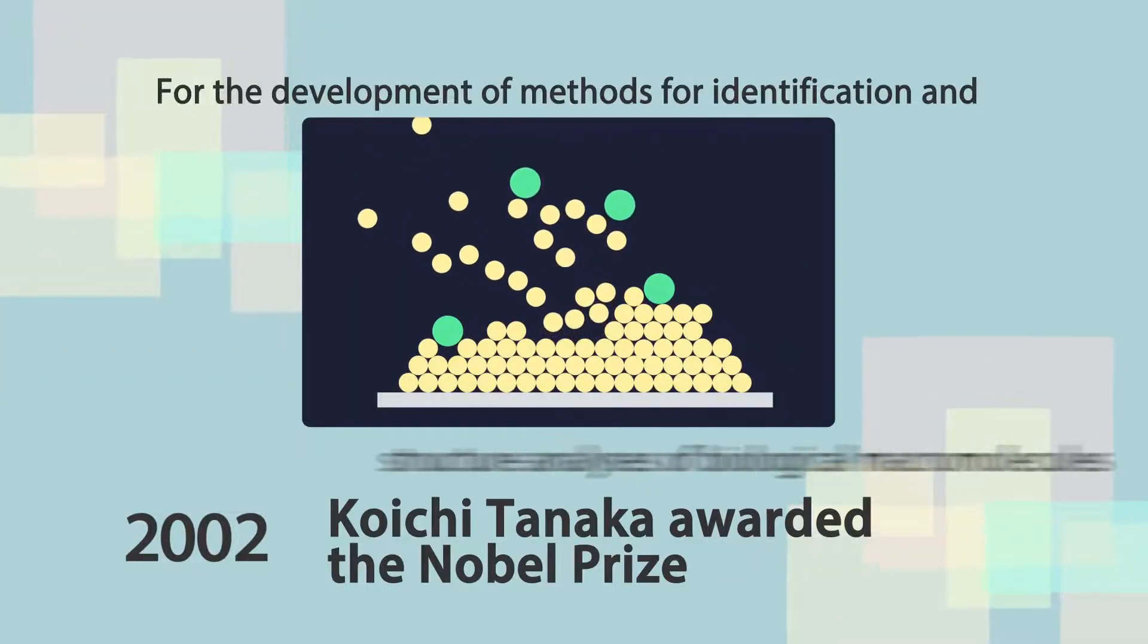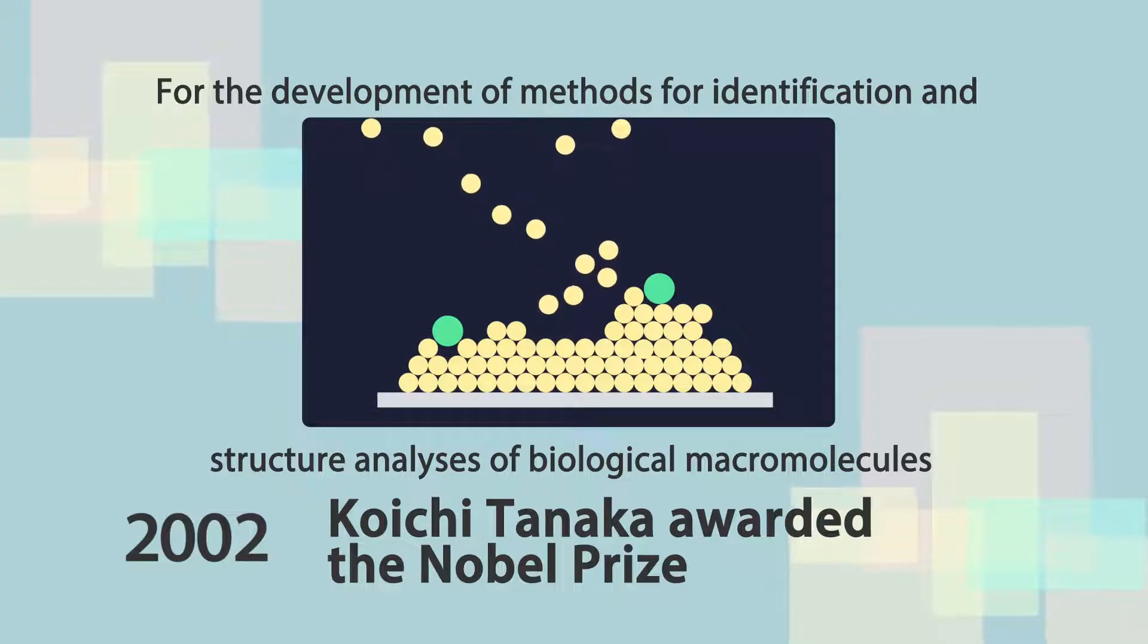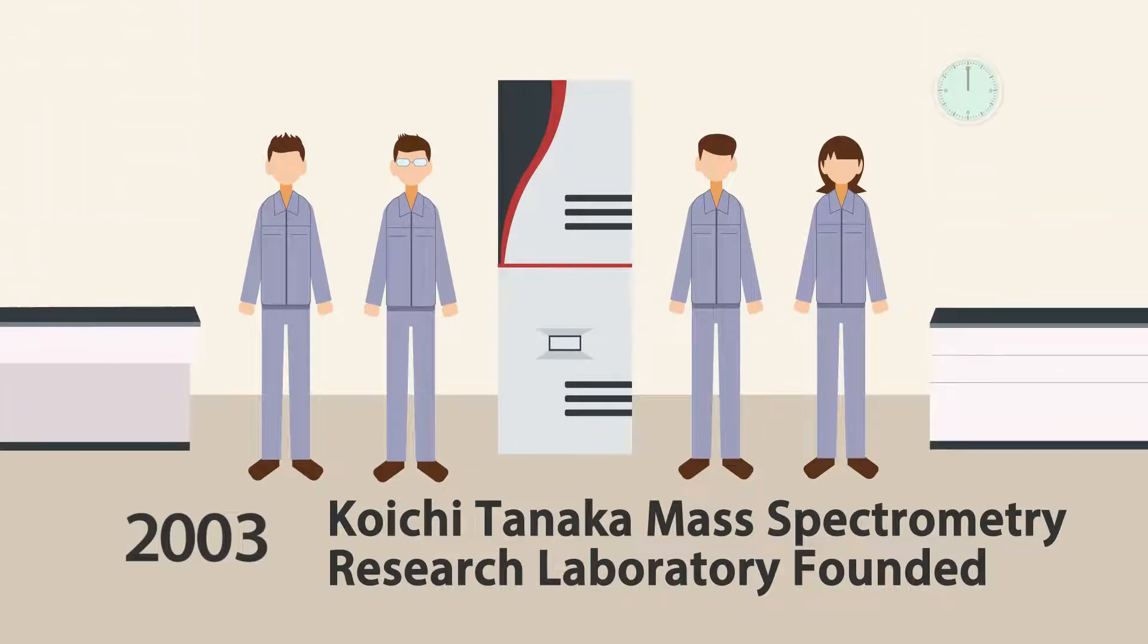In 2002, Koichi Tanaka was awarded the Nobel Prize in Chemistry. The following year, the Koichi Tanaka Mass Spectrometry Research Laboratory was founded.